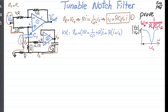Now substituting I2 using Equation 1, we get: Vn = (4R + 1/C1S + R²·C2·S)·I. We managed to find Vn very quickly as a function of I. This is a shortcut method to find the transfer function.